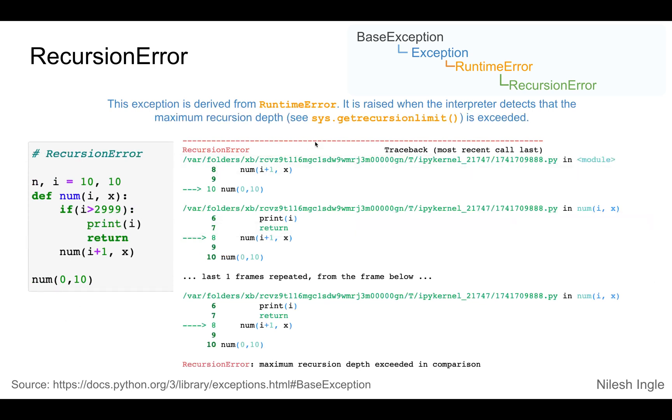A recursion error is part of the runtime error, derived from the runtime error which in turn is derived from the exception class. This error is raised when the interpreter detects maximum iteration depth. We can check what is the iteration limit by calling sys.getrecursionlimit().